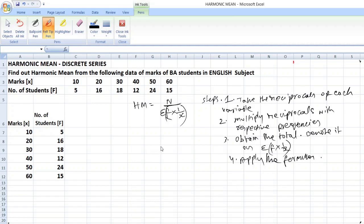Okay. So, here take the reciprocals. For that, you have to draw one column for this 1 by x. So, here 1 by 10 like this. 1 by 20. 1 by 30. 1 by 40. 1 by 50. 1 by 60. Okay. Each variable. Each variable. Okay. 1 is divided with each variable.